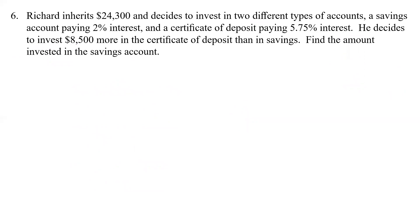Here we have Richard inheriting some money. He inherits $24,300 and decides to invest in two accounts: a savings account paying 2% interest and a CD paying 5.75% interest, investing $8,500 more in the CD than in savings. Now, do we have anything extraneous? Yes — since we're not calculating interest, the interest rate information is not needed for this problem.